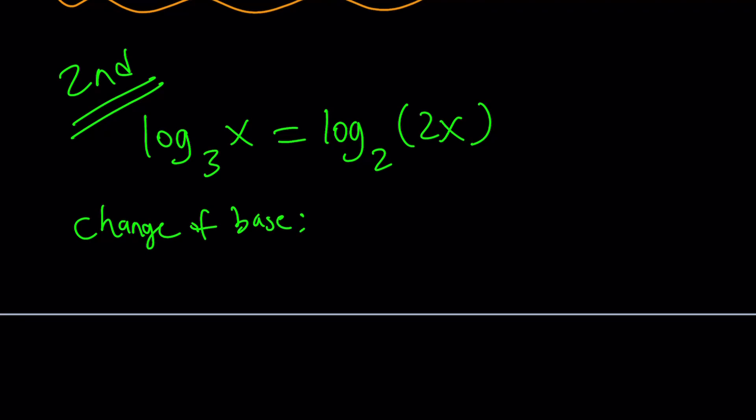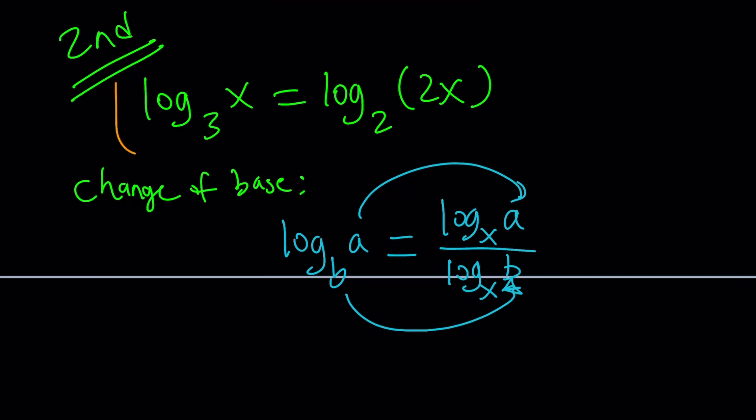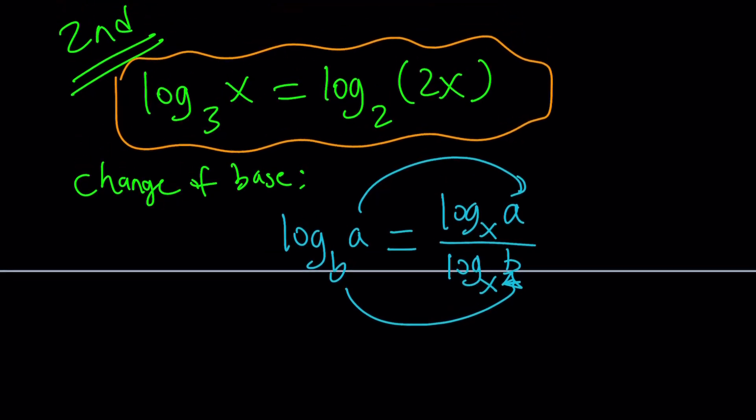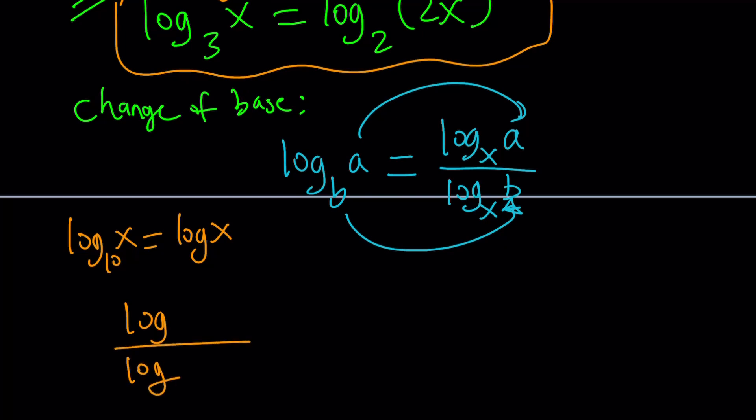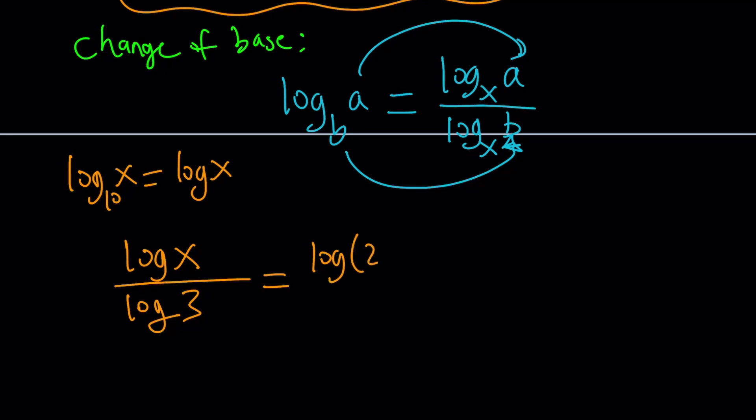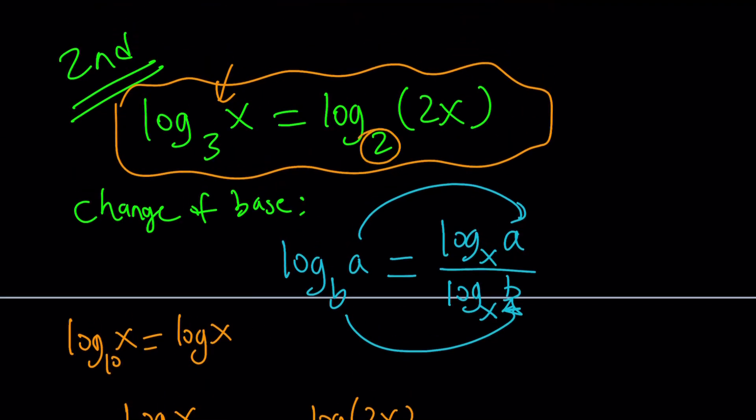Change of base formula works like this. If you have something like log a with base b, then let's say you want to turn it into another base, let's say base x. You can put the two logs with base x and then write the a here and b here. So a goes here, b goes here, and you're done. That's called change of base or COB. If you apply it, in what base are you going to use? It doesn't matter. You can use any base, you can use base 10, you can use ln. Let's use base 10. Base 10 is basically if you have something base 10, I'm just going to write it without the base. Log x without the base means base 10. Let's write this in base 10. You put log over log, and then x goes here and 3 goes here. And then the second one is just going to be log 2x in the numerator, divided by log 2.